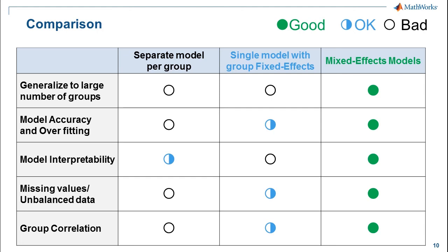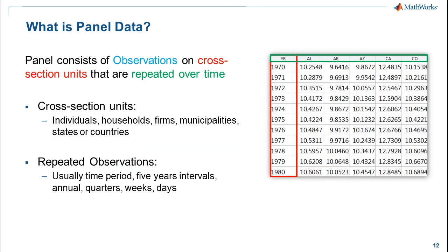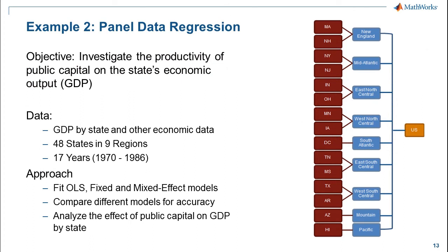In the next example, we'll see how to perform panel data regression using FitLME. Panel data is widely used in economic studies. A panel consists of data collected by observing many subjects over multiple time periods. Subjects — or cross-sectional units — could be individuals, households, firms, states, or countries. Observations could be GDP for states, unemployment rates, individual salaries, and so on. We'll explore several popular methods for fitting panel data regression models.